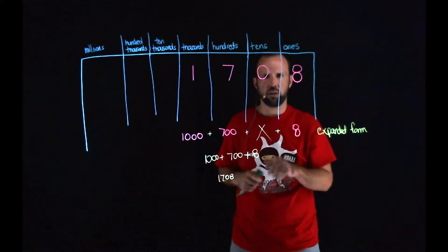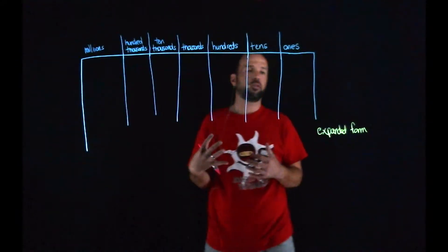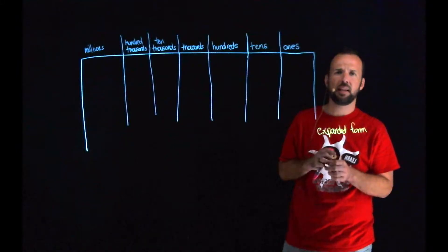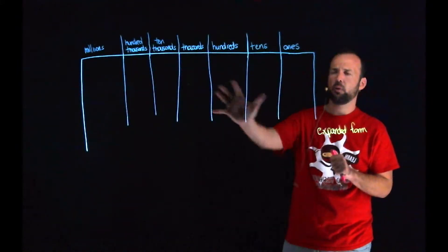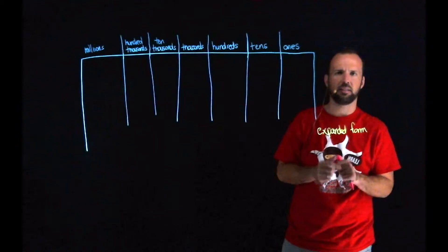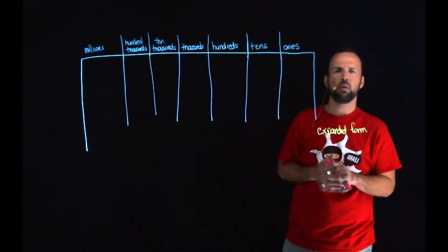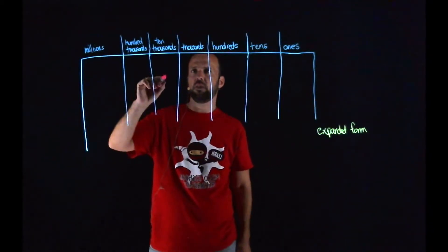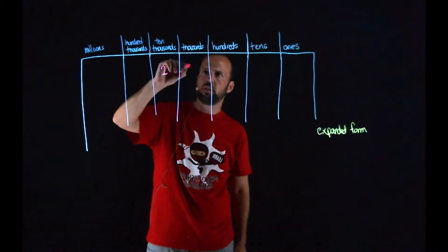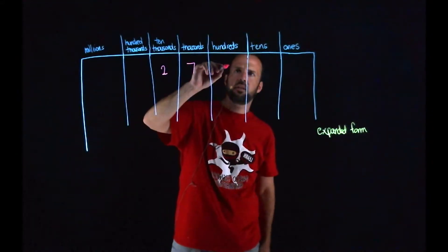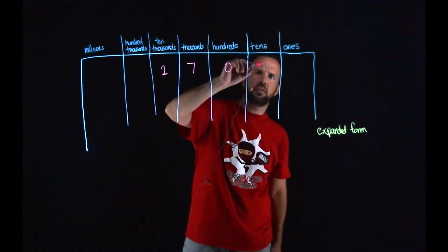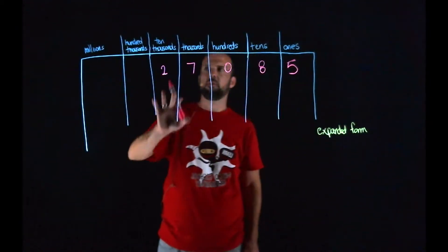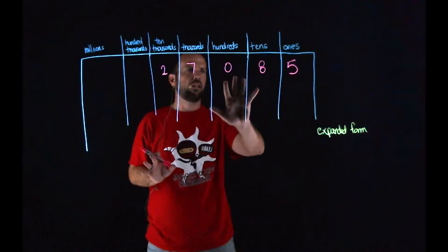Let's try another one — go ahead and erase your board. This time I would like for you to write the number 27,085. Go ahead and write that in your place value chart and then we're going to take a look at its expanded form. So if I was going to write that in on my place value chart, I would write it as 27,000, no hundreds, and 85 — eight tens and five ones. So this would be my number 27,085.